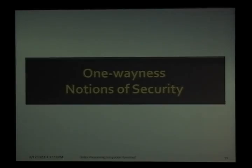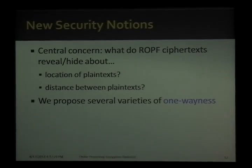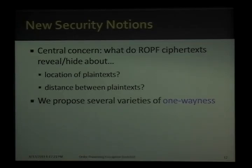Before discussing our main results, I need to talk about our new notions of security. We need new security notions because traditional notions of security are in general too strong to be satisfied by an OPE scheme. In coming up with new security notions, we'd like to address the central concern of the open question from the old paper: what do random order-preserving function ciphertexts reveal and/or hide about the location of plaintexts and distance between plaintexts? To answer these questions, we propose several varieties of one-wayness.